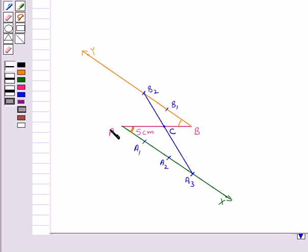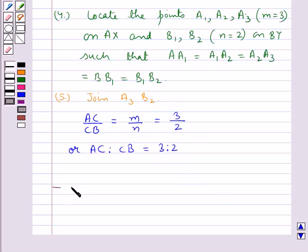Hence, the given line segment AB is divided in the ratio M is to N. This completes the session. Hope you have understood the concept of division of a line segment in a given ratio.